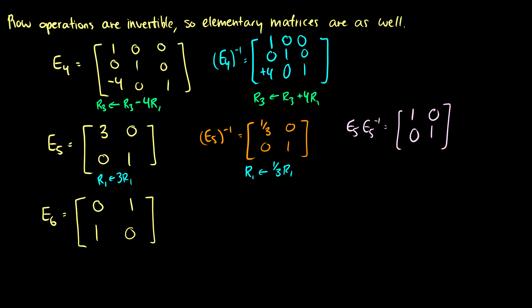So what is E6? What does this represent? Well, this is a row swap — row 1 swapping with row 2. You can tell depending on which position the 1s are in: the 1 is in position A12 and A21, so these two rows are switching. So what's the inverse? Well, the inverse is just going to be switching the rows back. So essentially, the inverse matrix is exactly the same in this case.